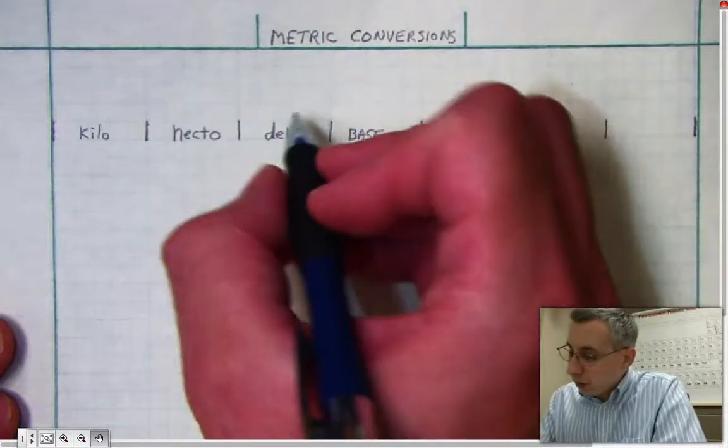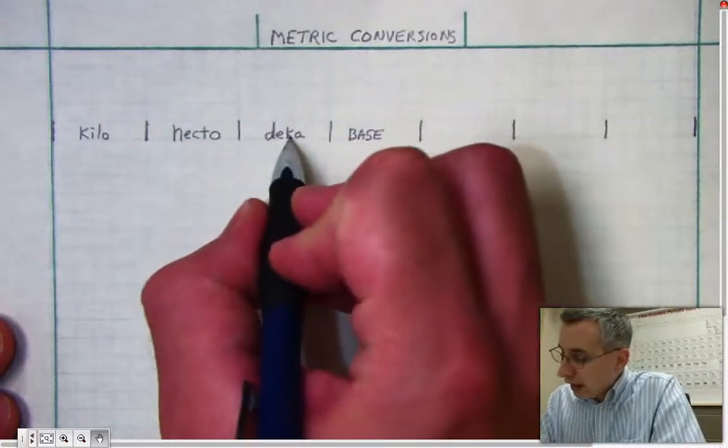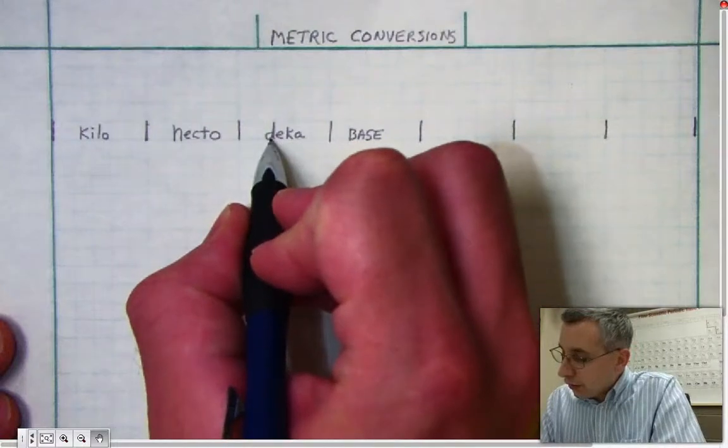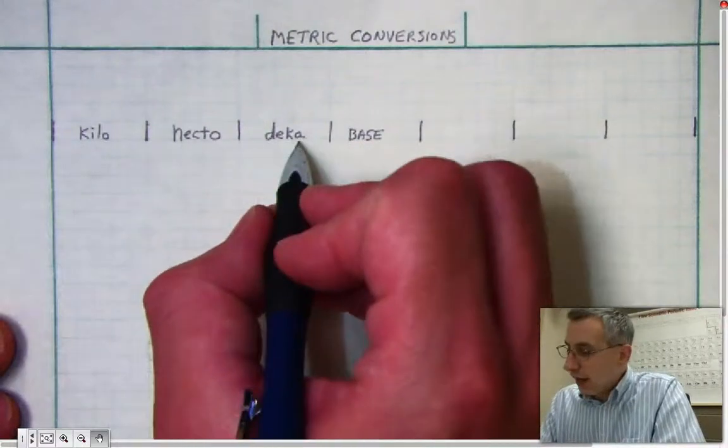I should point out something about Deca. It's sometimes spelled D-E-K-A, and sometimes spelled D-E-C-A. I'm going to use D-E-K-A.